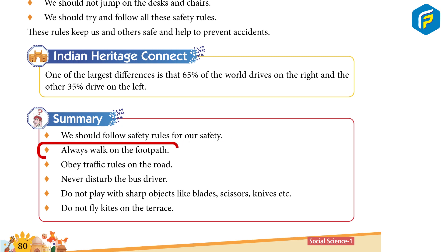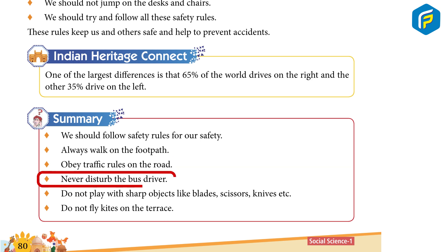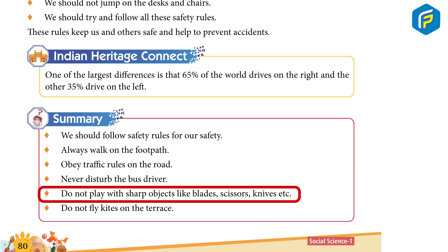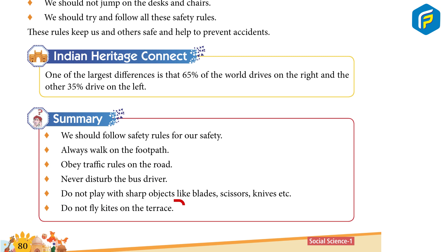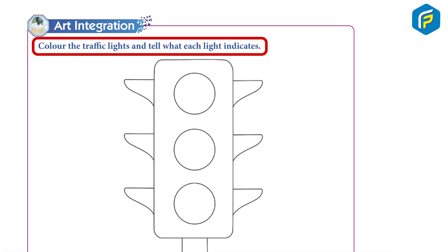Summary: We should follow safety rules for our safety. Always walk on the footpath. Obey traffic rules on the road. Never disturb the bus driver. Do not play with sharp objects like blades, scissors, knives, etc. Do not fly kites on the terrace.